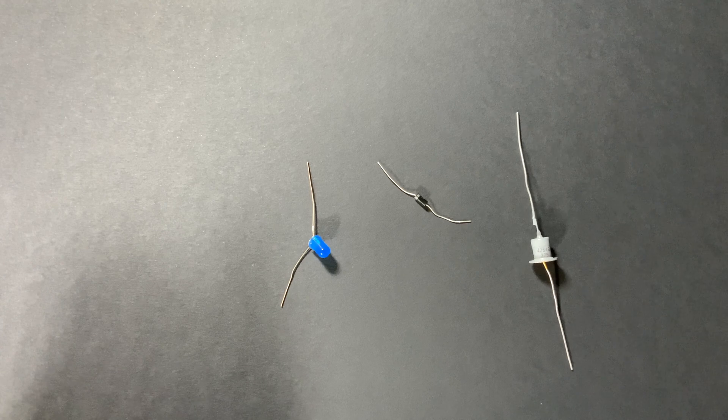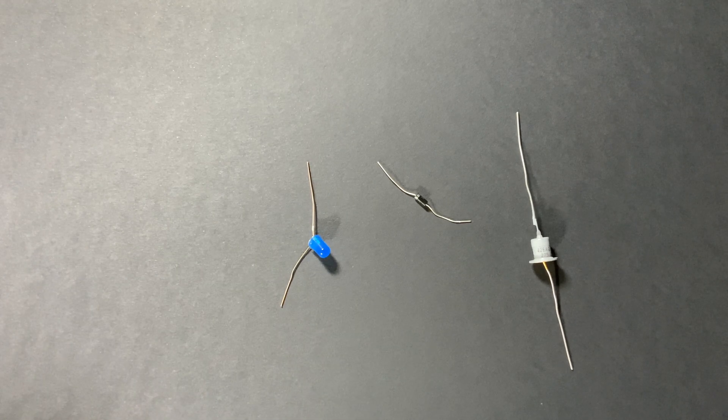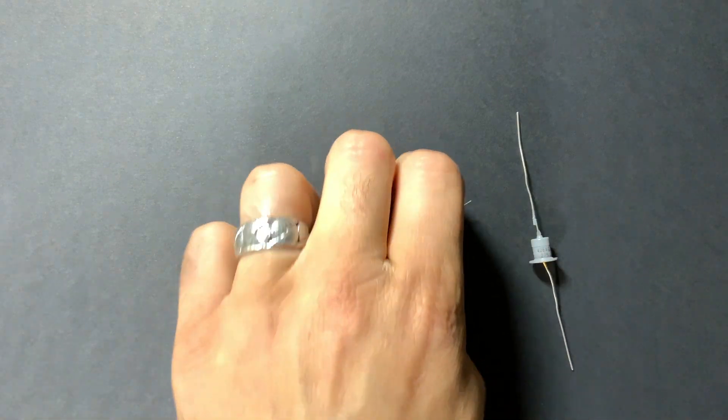Okay so let's talk about how we can figure out what the cathode or the anode is of the diode. So I've got three different types of diodes. Let's start with this one.